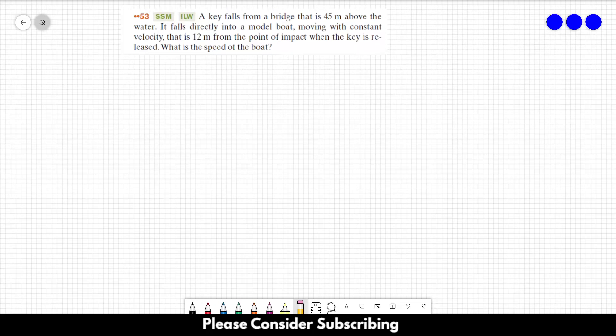Number 53: A key falls from a bridge that is 45 meters above the water. It falls directly into a model boat moving with constant velocity that is 12 meters from the point of impact when the key is released.